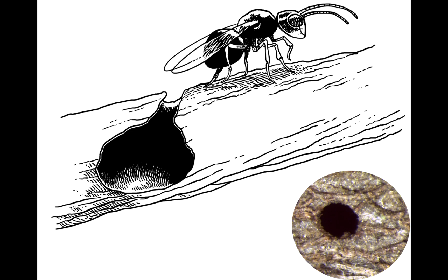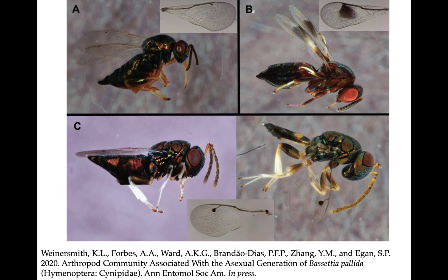Crypts and other galls are meant to protect developing wasps from natural enemies like parasitoids, but nature finds a way — and these are three of the 19 parasitoid species that we found associated with Bacetia pollita crypts.